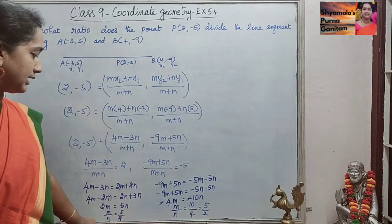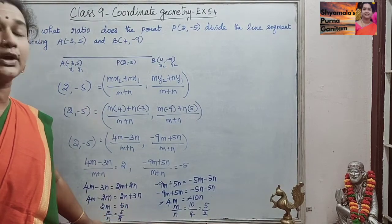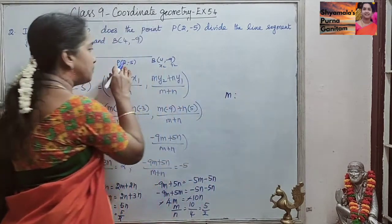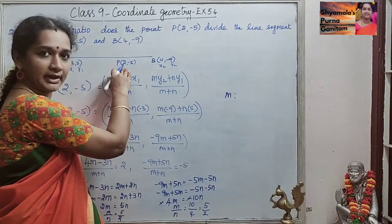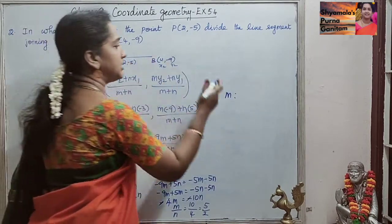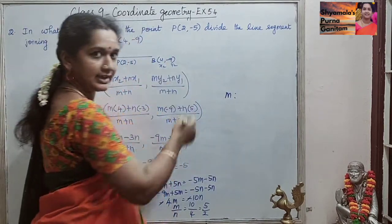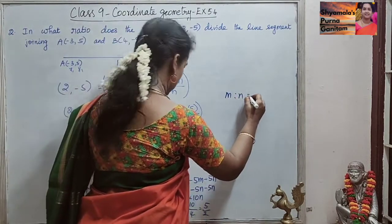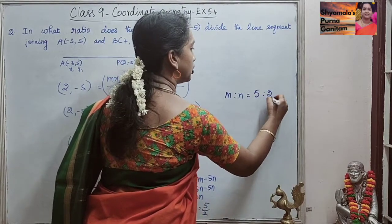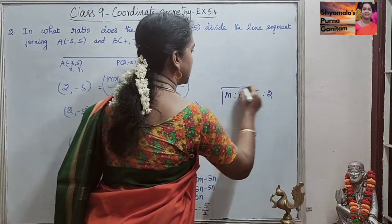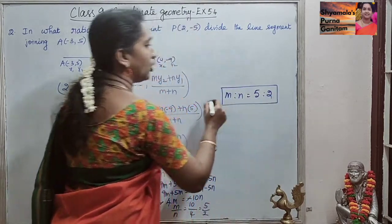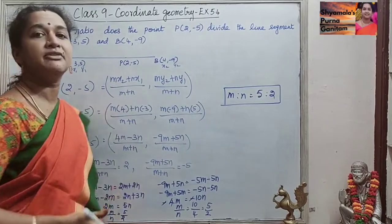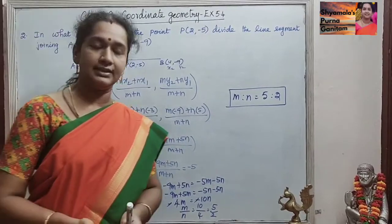So m/n is equal to 5/2, that is, the point P(2, -5) is dividing the given line segment in the ratio m:n, that is 5:2. So in the ratio 5:2, it is dividing the line segment.